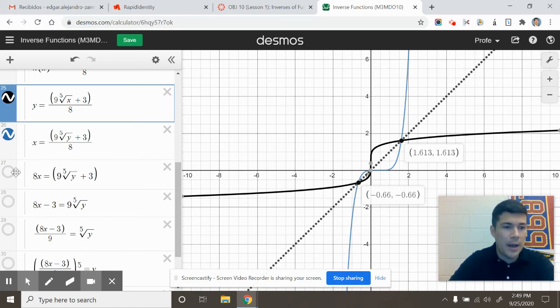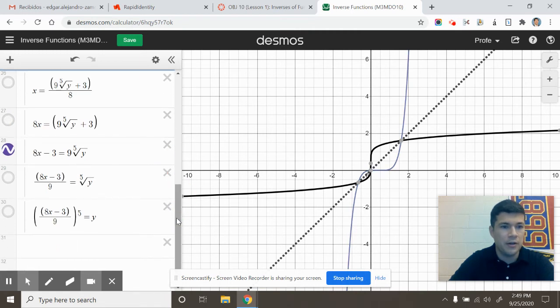Now, to solve for y, I'm going to multiply by eight. And then I'm going to subtract three, and I progressively check that my graphs are the same. Next, I'm going to divide by nine. So far, so good. And last, I'm going to raise everything to the fifth power.